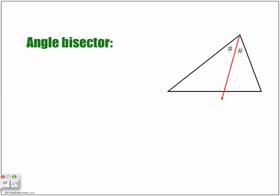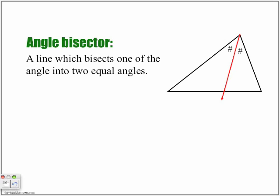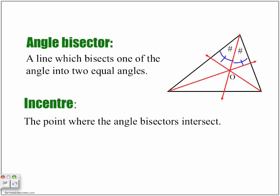An angle bisector is a line from a vertex that bisects one of the angles into two equal angles. From each vertex, we cut the angle in half so that the two resulting angles are equal. If we draw all these angle bisectors from each vertex point, they all intersect at one point called the incenter.